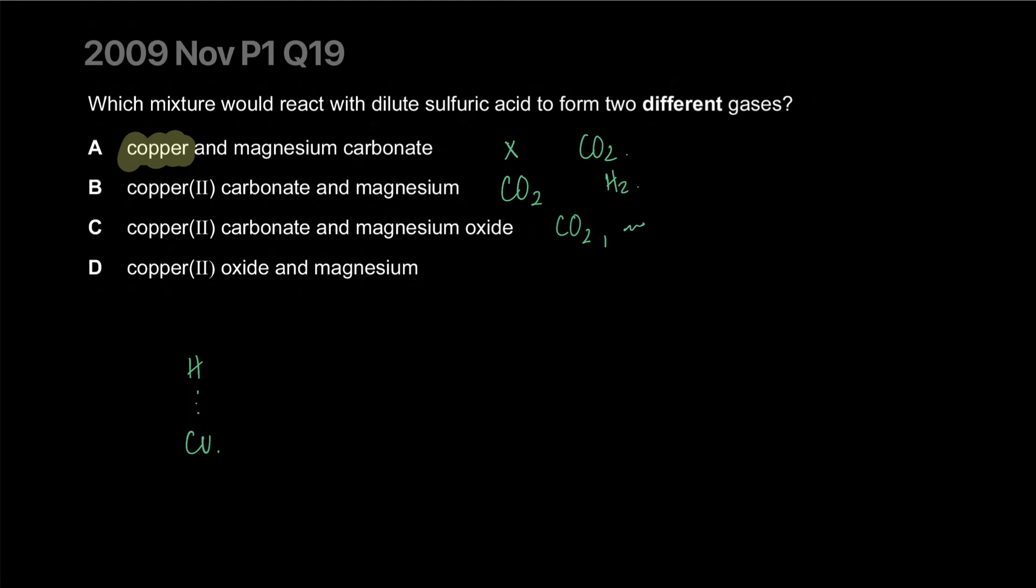It'll produce something else, so there's no gas formed. That's a clever little trick. Copper oxide and magnesium - magnesium will react, but copper oxide again will not produce a gas. That's a real nice trick - I was legit confused for a second. B is the correct answer. This is a good question actually. They did highlight different gases. The correct answer is B.